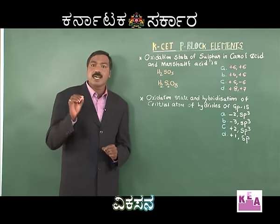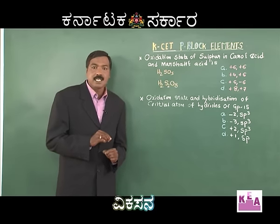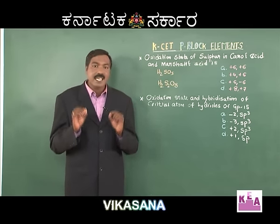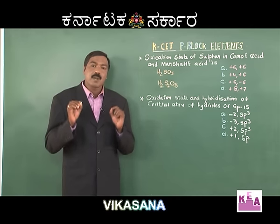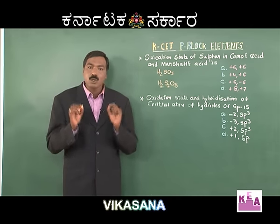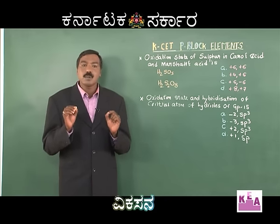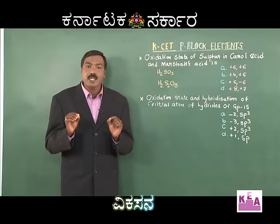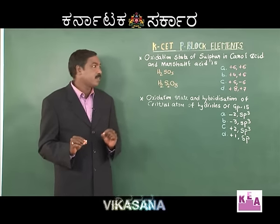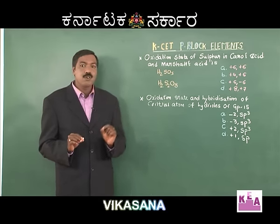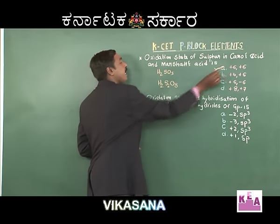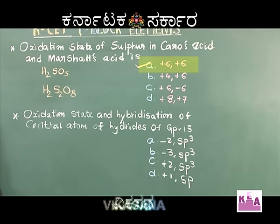Caro's acid and Marshall's acid have a maximum oxidation state of +6 and +6 only. This is due to the presence of peroxy linkage, not +8 and +7. Therefore the correct option is option A: +6 and +6. Hope you understood it.